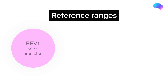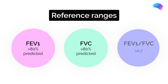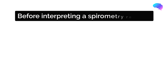For FEV1, this should be greater than 80% of the predicted value. For FVC, this should also be greater than 80% of the predicted value. For the FEV1 over FVC ratio, this should be greater than 0.7.